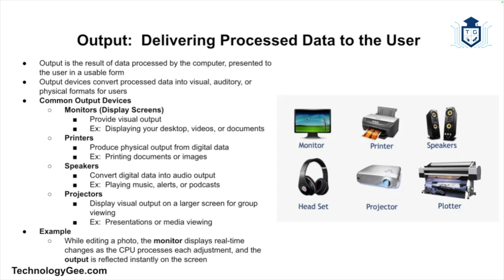Output is the result of data that has been processed by the computer — it's how the computer communicates results back to the user. Output devices make this possible by taking the processed data and presenting it in a usable form. Examples of common output devices include monitors, also called display screens, which provide visual output. Everything you see on the screen — from your desktop to a video or a spreadsheet — is output generated by the computer's processing of data.